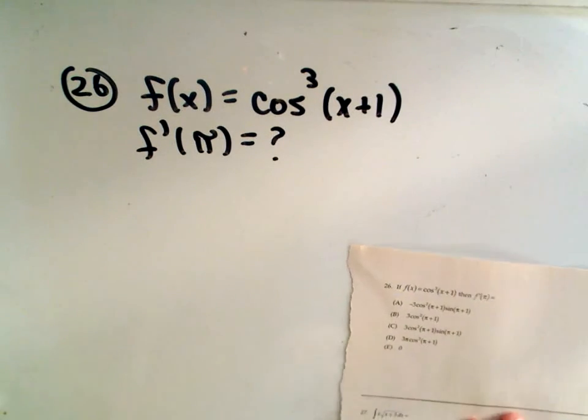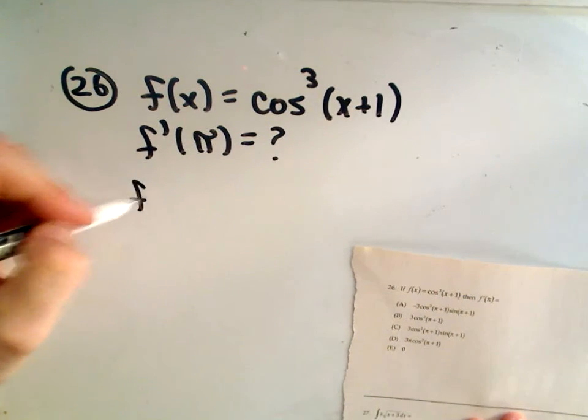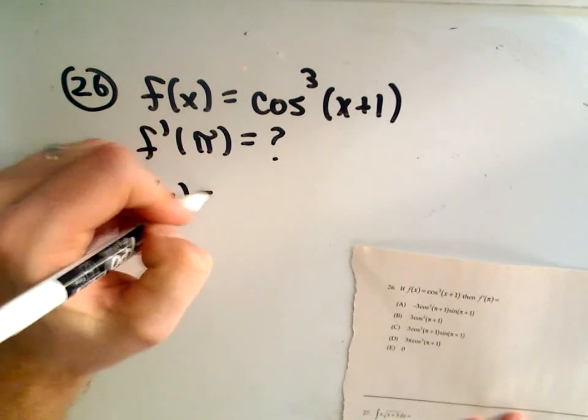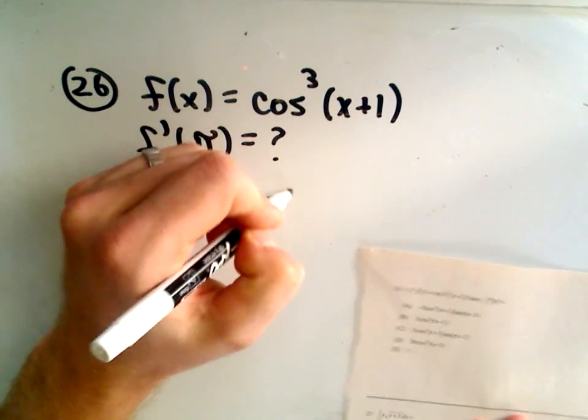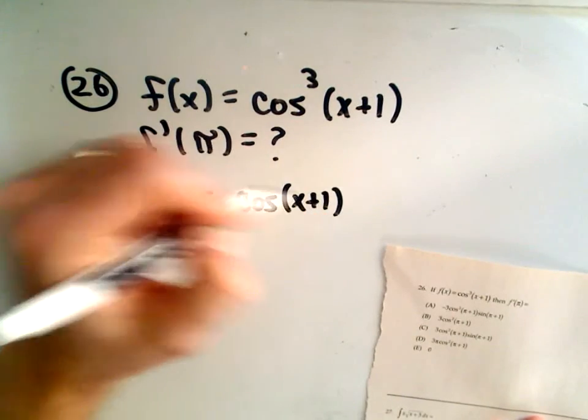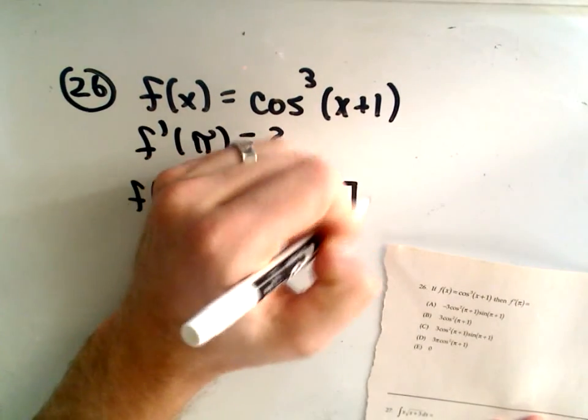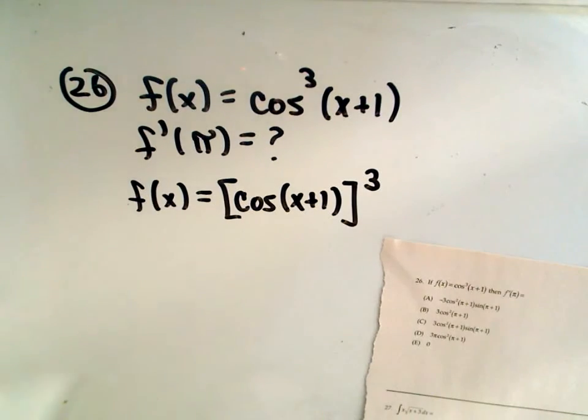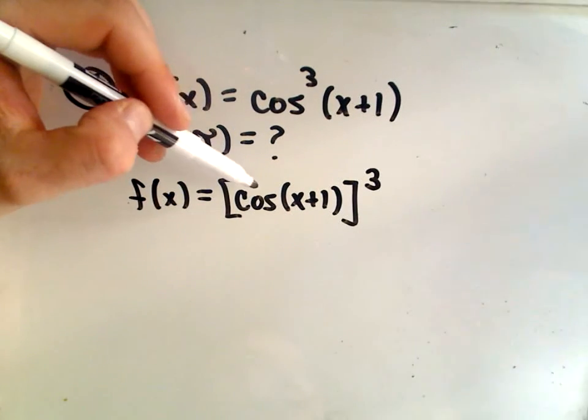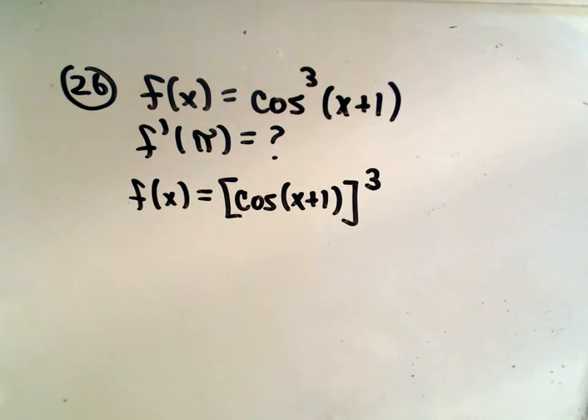The first thing I would do is simply rewrite my original function. I'm going to rewrite it as cosine x plus 1, all of that being cubed. That's what this notation means. I prefer to see it this way because it makes me think to use the chain rule.